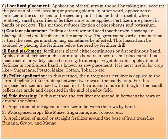The second type of localized placement is band placement, where fertilizer is placed either in a continuous or discontinuous band. Application of fertilizers in a discontinuous band is called hill placement, and it is most useful for widely spaced crops like fruit crops and vegetables. Application of fertilizer in a continuous band is known as row placement, and it is most useful for crops like sugarcane, potato, maize, cotton, and tobacco.